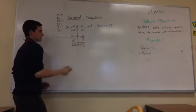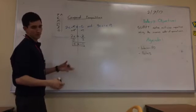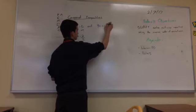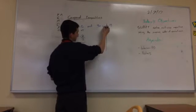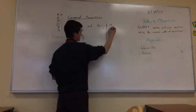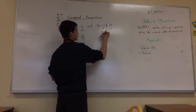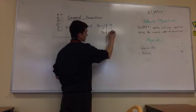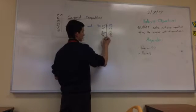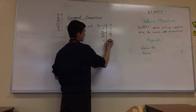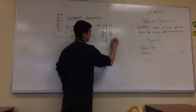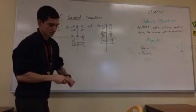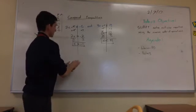Now for the other inequality: 3c plus 1 is less than 13. Starting with what's added or subtracted — subtract 1 from both sides, those cancel, 3c comes down, it's less than, 13 minus 1 is 12. Now divide by 3: c is less than 4.